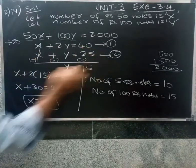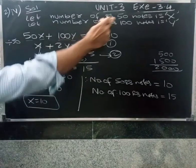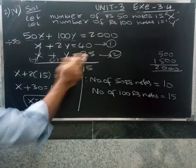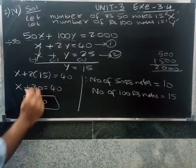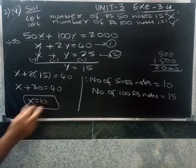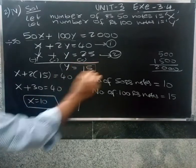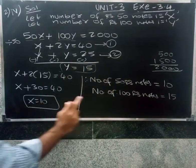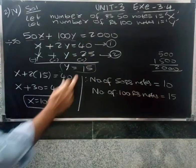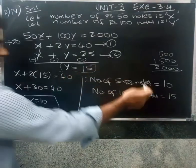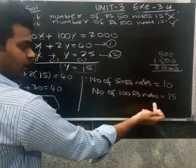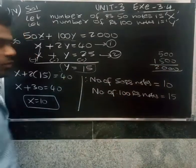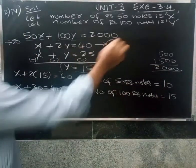You have 25 notes total, so x plus y equals 25. This is the elimination method. We have x and y. If you have 50-rupee notes, add x. If you have 100-rupee notes, add y. So 10 notes of 50 gives 500, and 15 notes of 100 gives 1500. The total amount is 2000. Okay, next we will fix the question.